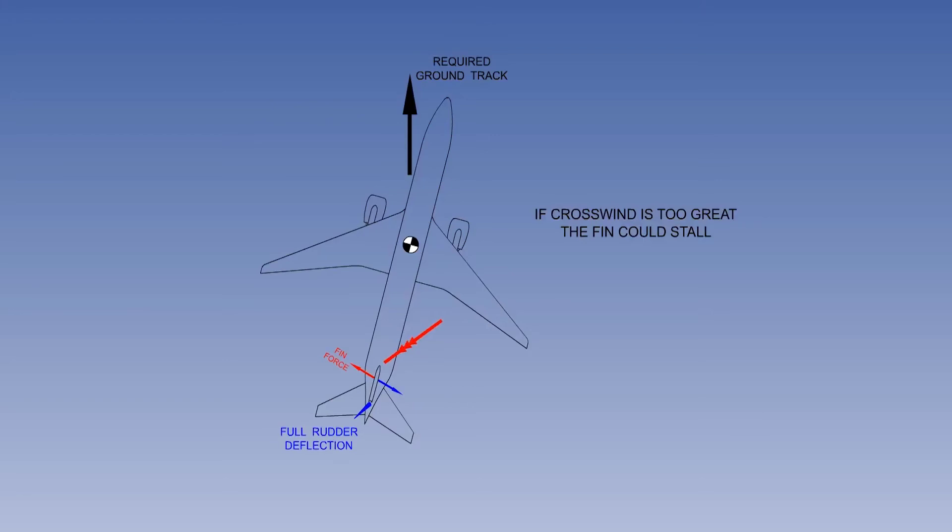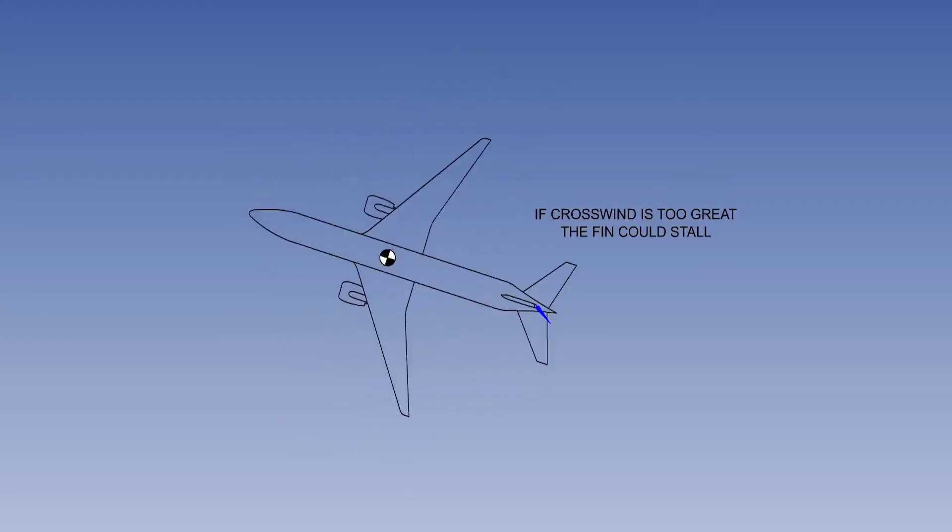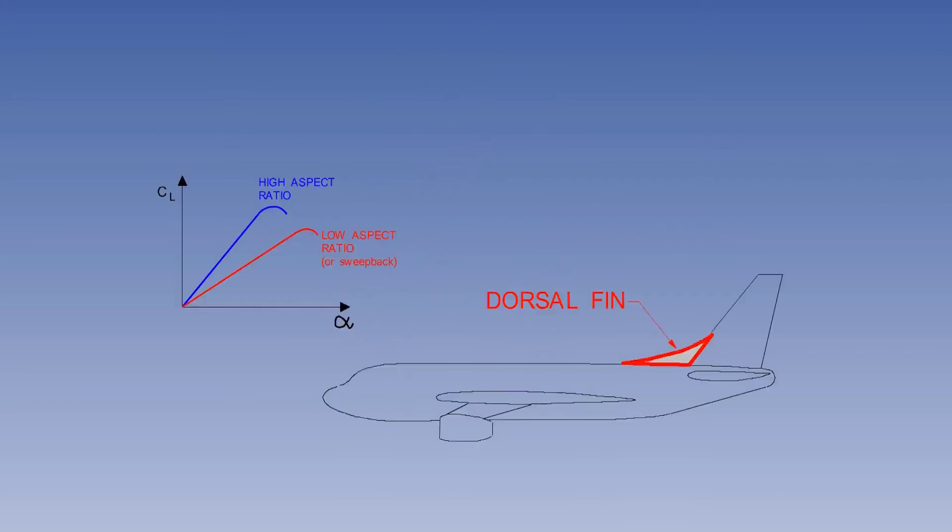In this example, we are considering a large crosswind gust. Fin stall must be prevented. The designers can increase the stalling angle of the fin by sweeping the fin backwards, or by decreasing the aspect ratio of the fin by fitting a dorsal fin.